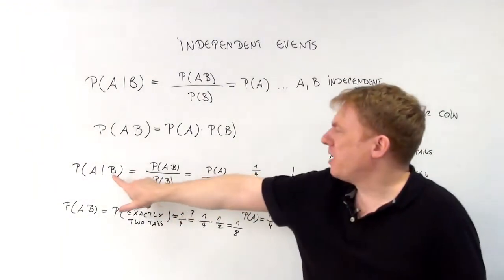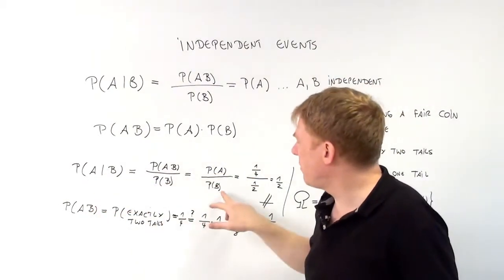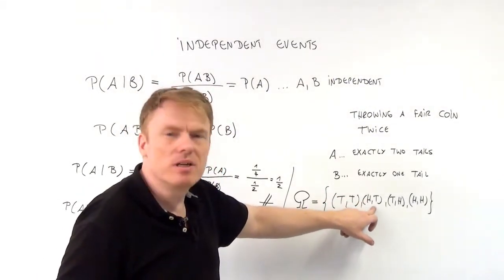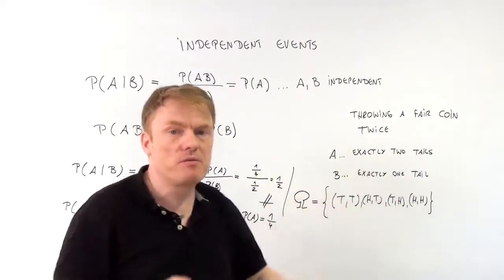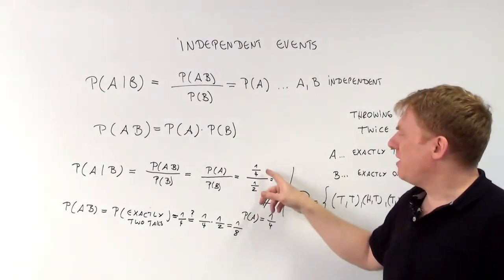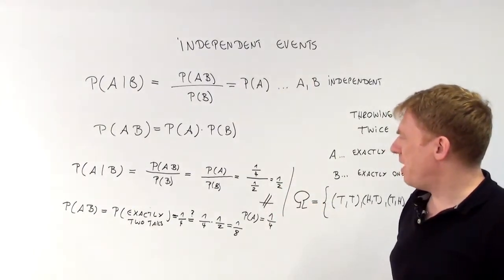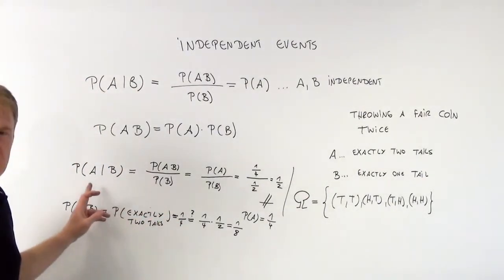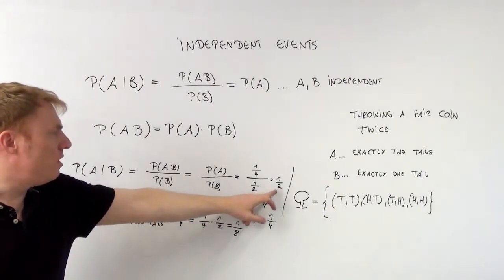Then the probability of the given event B — exactly one tail — is 2 out of 4, because head-tail and tail-head are both outcomes with exactly one tail. So 2 out of 4 equals 1 out of 2, which is 0.5. Therefore P(A|B) = 0.25 divided by 0.5, which gives us 0.5.